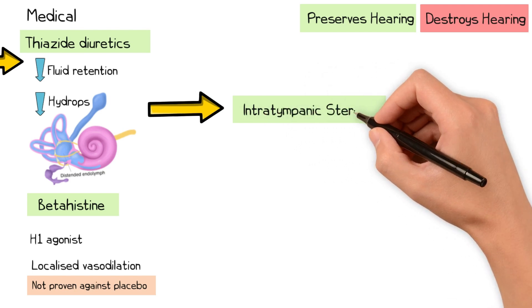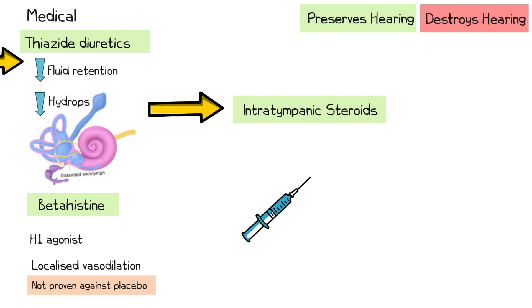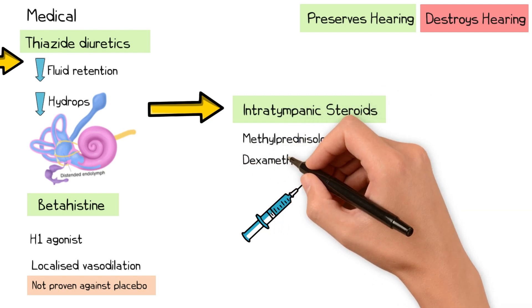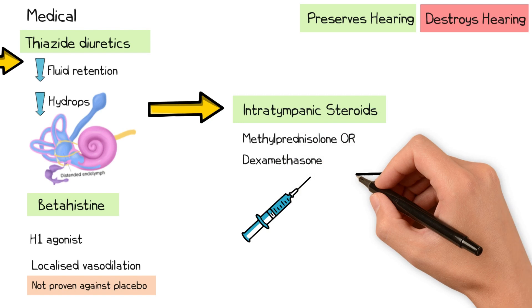A short course of repeated intratympanic steroids can also help to control symptoms. The dose and frequency of these administrations vary by centre. A typical regime includes three dosages of either methylprednisolone or dexamethasone, administered at three to seven day intervals.